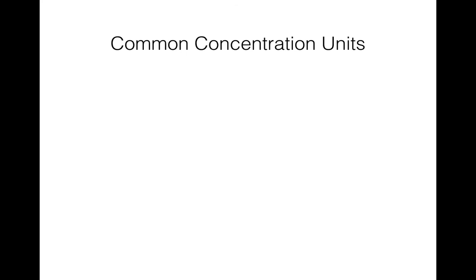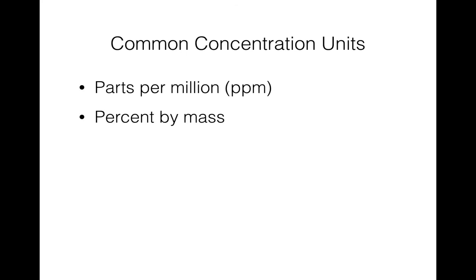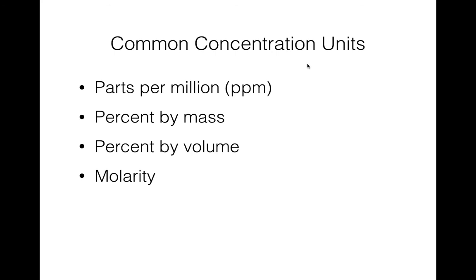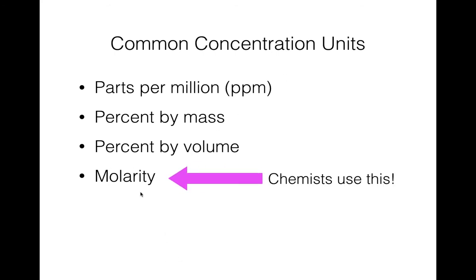Now we're on to common concentration units. There are various units used to calculate concentration. You might be familiar with the concept — if you make Kool-Aid and it tastes more syrupy, it's more concentrated; if you add more water, it's more dilute. In chemistry, we want to calculate the exact concentration. Chemists commonly use molarity, which is a little more complicated and we'll save for another video. Today we'll talk about percentages and parts per million, which are pretty simple calculations.